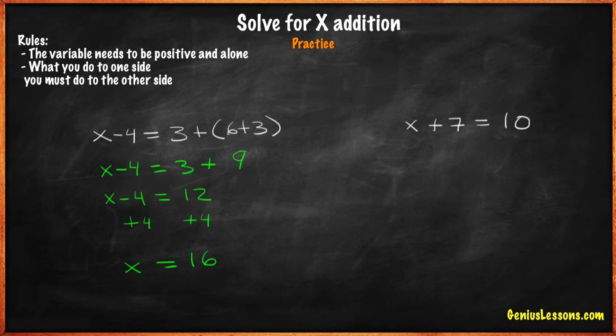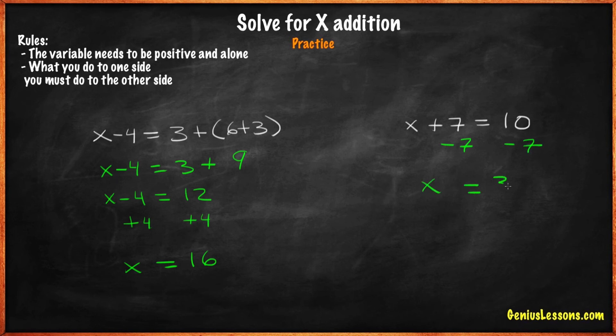Next. x plus 7 equals 10. Our goal is to find the value of x. As we can see, we have two sides: the side on the left and the side on the right. We need to have the variable x alone on one side. In order to do this, we will subtract 7 from both sides. 7 minus 7 is 0, and 10 minus 7 is 3.